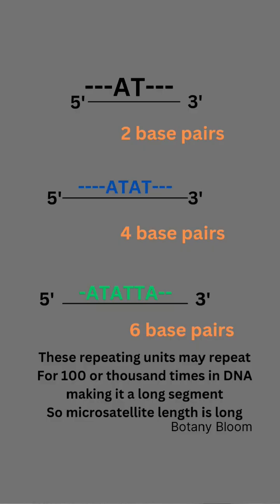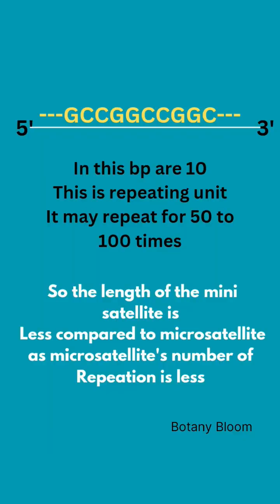In micro satellites, the number of repeating units may repeat many times — up to a thousand times — making it a long stretch of DNA. In mini satellite, the repeating units are not repeated as many times, which is why the length of the mini satellite is less when compared to micro satellite.